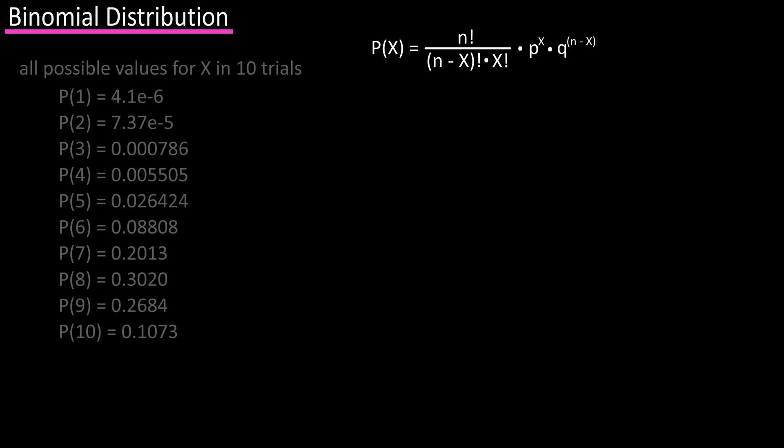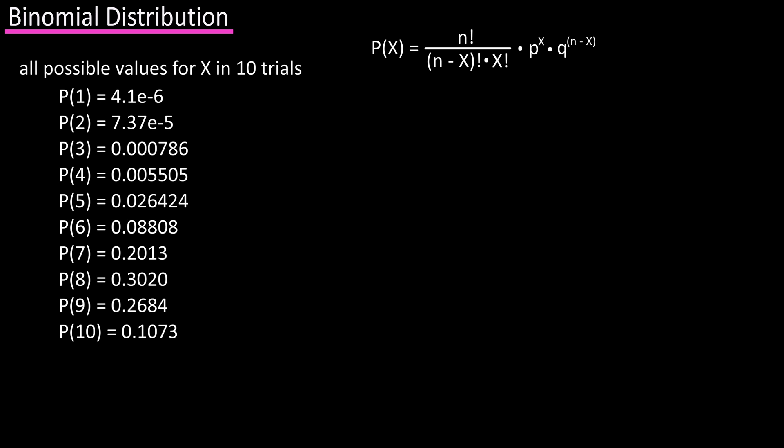As a note, here are all the possible values for x, 1 through 10, along with their probabilities. If we add these up, we get 0.99974. If I had not rounded them off, the result would have been 1. So this checks out, because the sum of the probabilities is equal to 1.